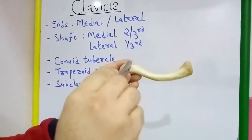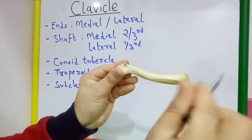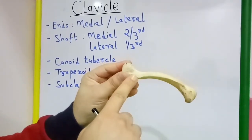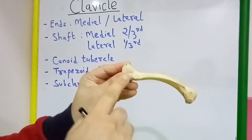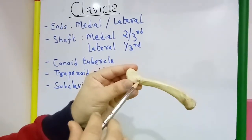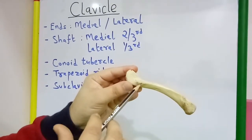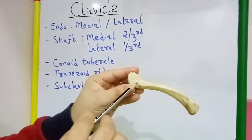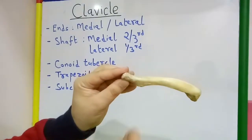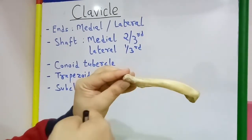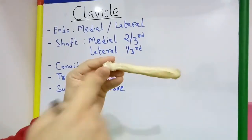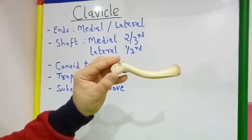If we see the shaft, the medial two-third is convex forward and concave backward, and the lateral one-third is concave forward and convex backward, whereas on the inferior surface of the lateral end we see the conoid tubercle and trapezoid ridge going laterally. So this clavicle is the right clavicle.